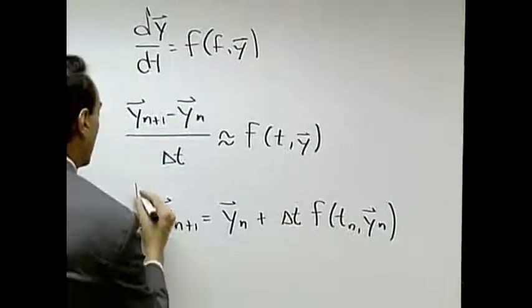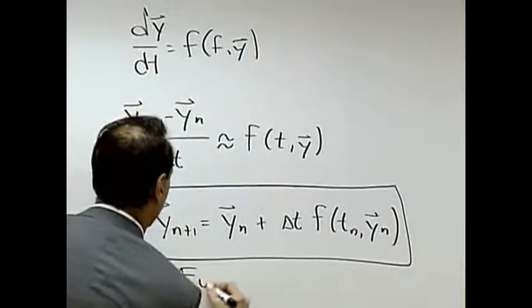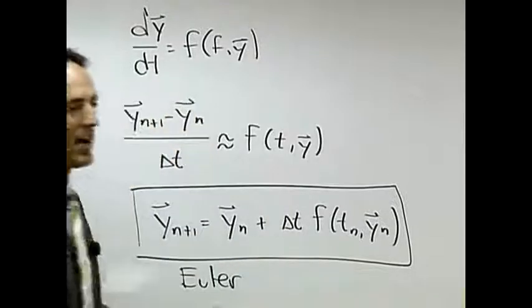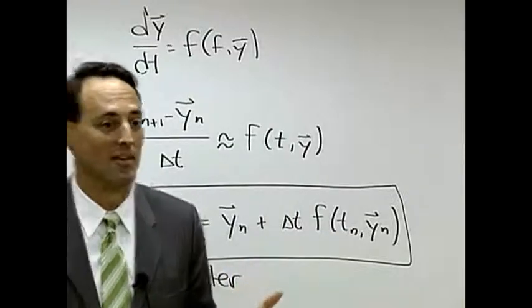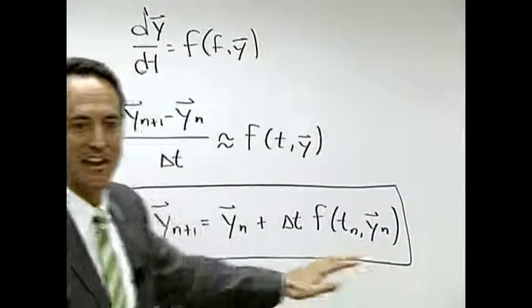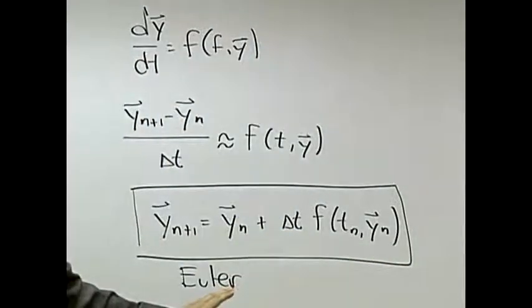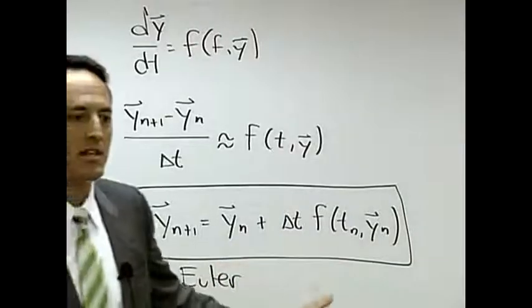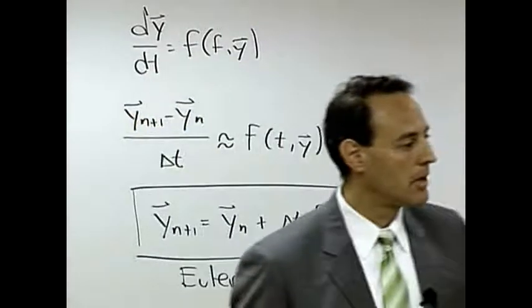And notice what this tells us. This is called the Euler formula. Do you like how I box that? I'm doing that just for the sake of the engineers in the class because they know now it's important because I put a box around it. This is called the Euler formula. It is the simplest solution, in some sense numerically, to a differential equation.